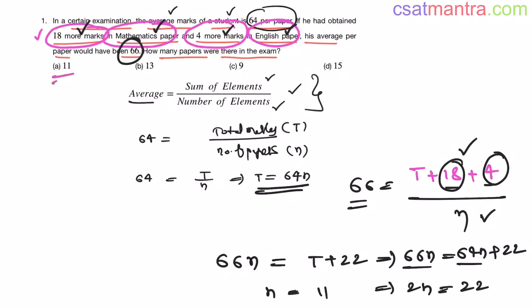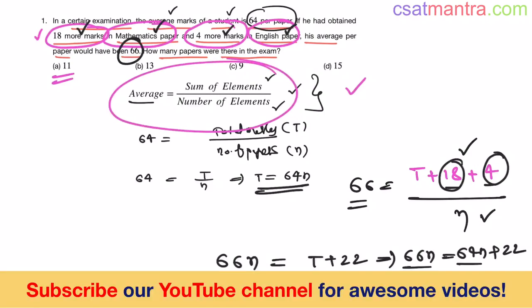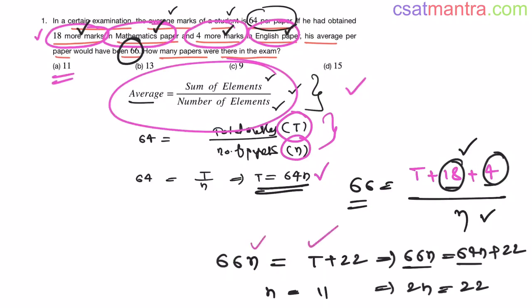So our answer is A. Very easy question. Kindly stick to the concepts, the thumb rules which we have taught in our course. Thumb rule means this is the rule for averages problems. Any problem you just have to think in terms of this formula. You don't know total number of marks, you assumed it. You don't know number of papers, you assumed it. Now you got an equation between these two. In the second case, you will again get the equation in these two. Now eliminate T from this equation. You got the value of N.